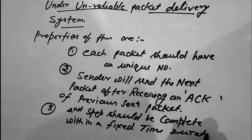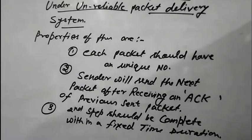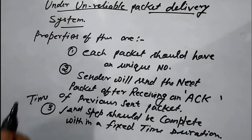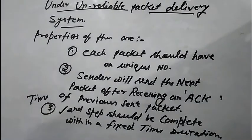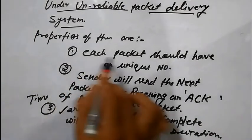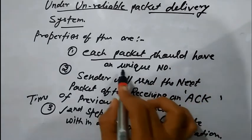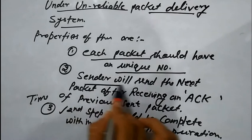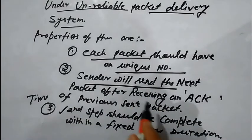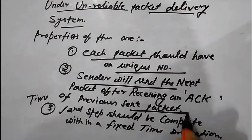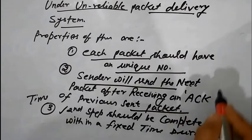The third property says that time is very important — the receiver should send an acknowledgement within a time duration. So these are the three properties: first, each packet should have a unique number; second, the sender sends the next packet after receiving the previous packet's acknowledgement.